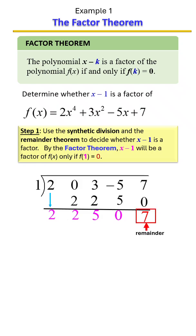Our remainder is 7. In order for the number we plugged in to be a factor, we must have a remainder of 0. Since we did not get 0, it means that x minus 1 is not a factor of this polynomial function.